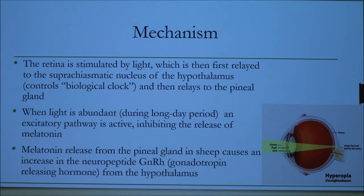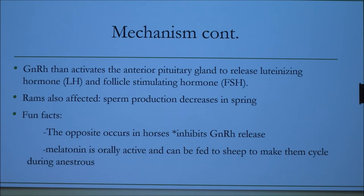To continue: GnRH comes from the hypothalamus to activate the anterior pituitary gland to release LH and FSH, which are important for cycling — those are the hormones involved in their cycle.